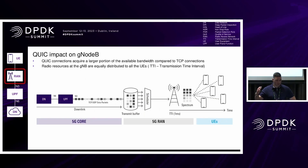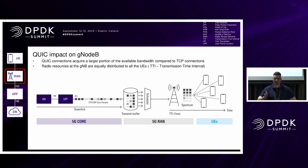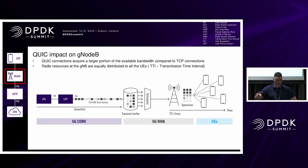Drawing this up as a use case: historically, there is a fair share of user equipments attached to a certain cell — we call it GnodeB in 5G — and those GnodeBs historically have a simple scheduler, either round-robin or first-in-first-out. If everything is fine and all applications behave fairly, you get a fair share of spectrum defined by a time interval of about one millisecond. A downloading packet goes through the UPF, into the scheduler, into the transmit buffer, and out on the radio.